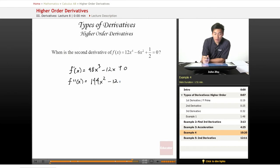And we want to know when this expression equals 0. So let's just set 144x squared minus 12 equals 0. Divide by 12 on both sides. You have this simplified to 12x squared minus 1 equals 0.